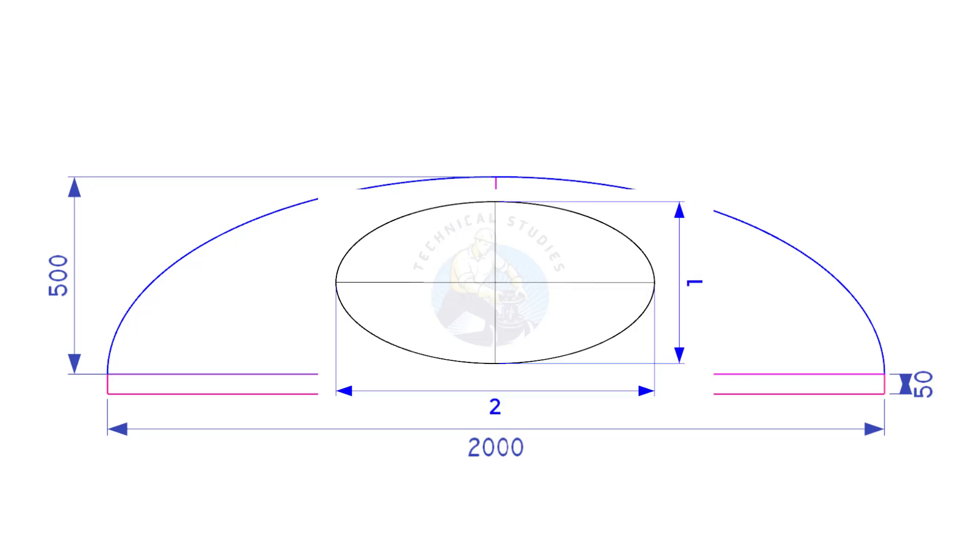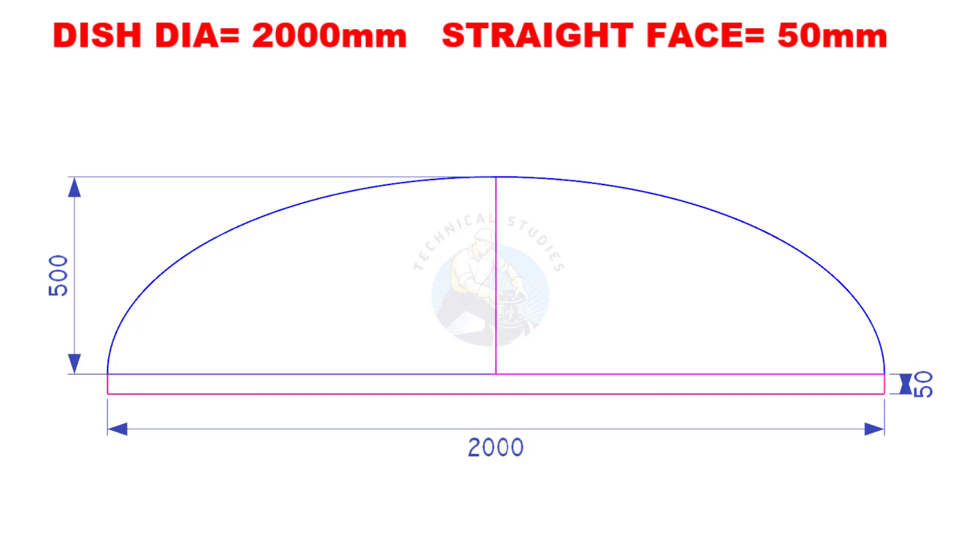Most commonly used elliptical dish ends are of 2 to 1 ratio. An elliptical dish end is half of an ellipse and the straight face.